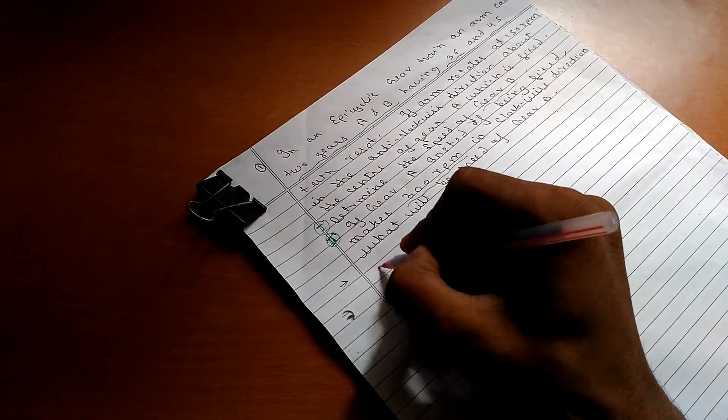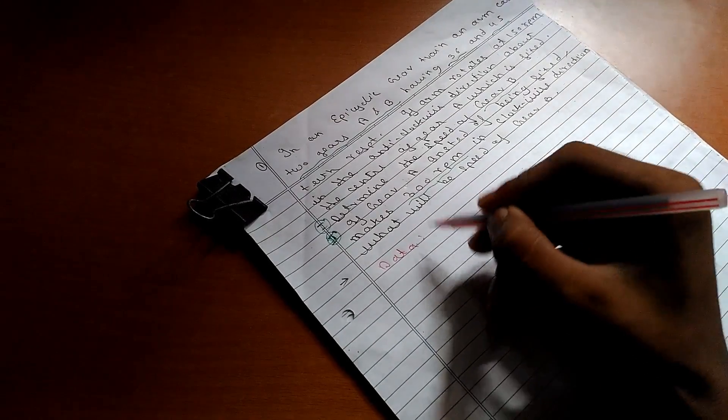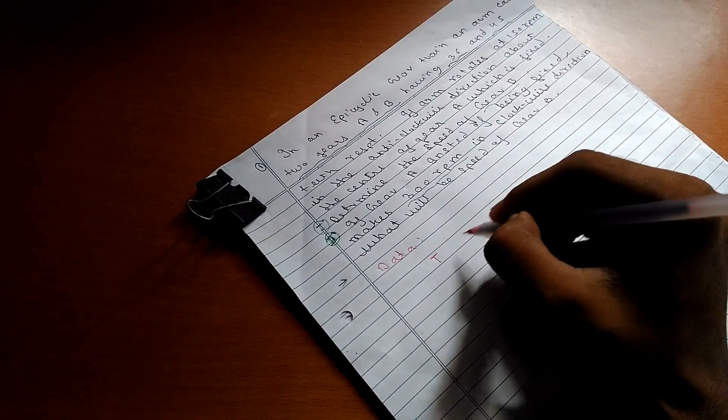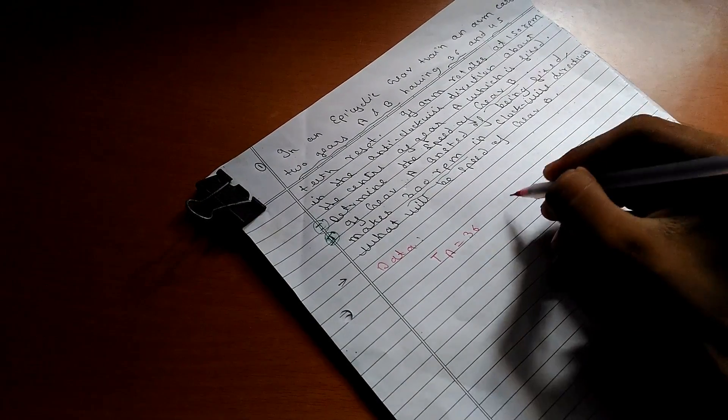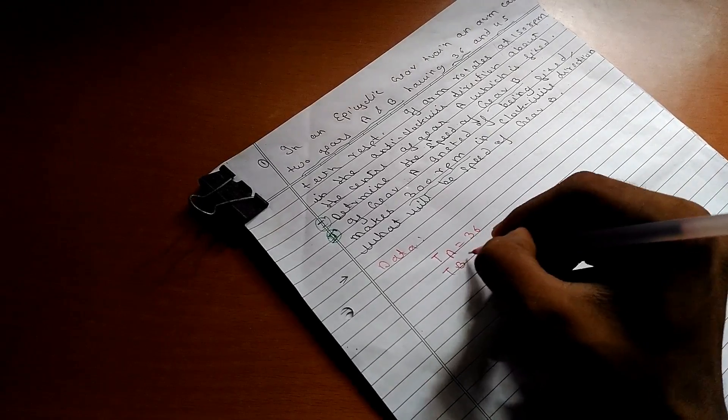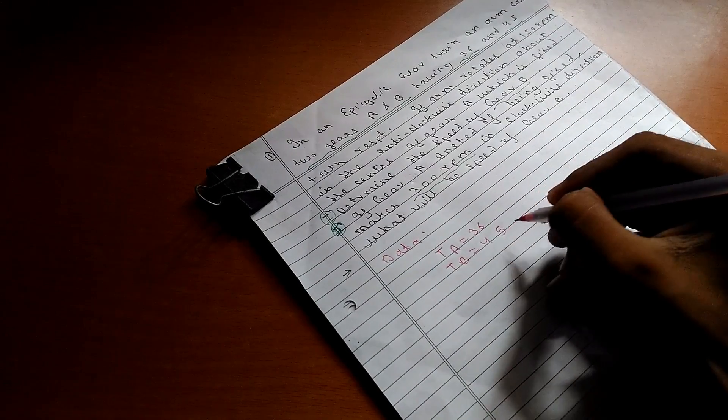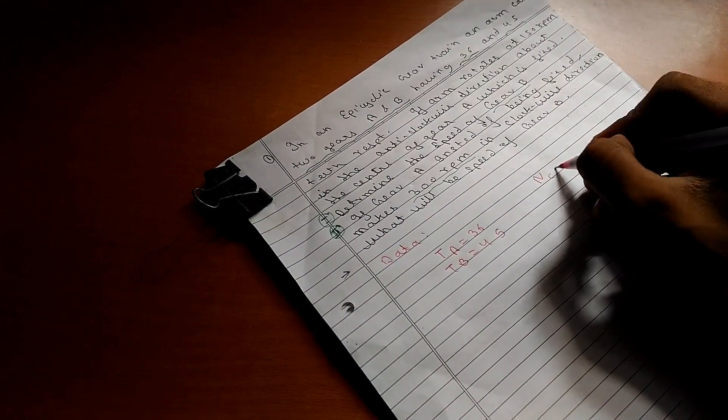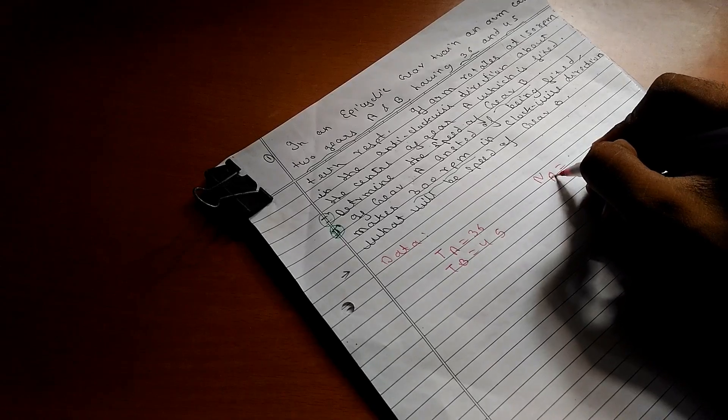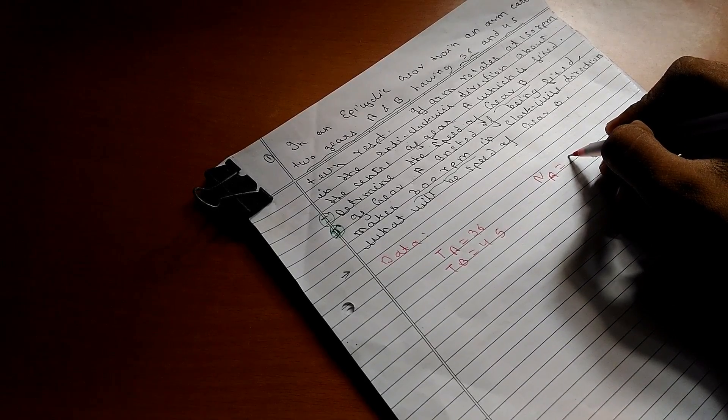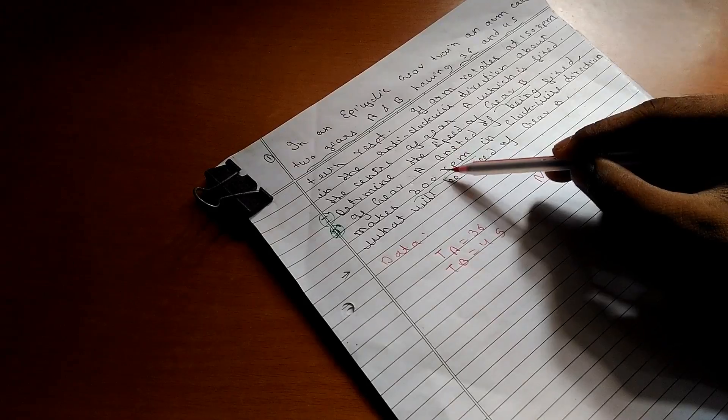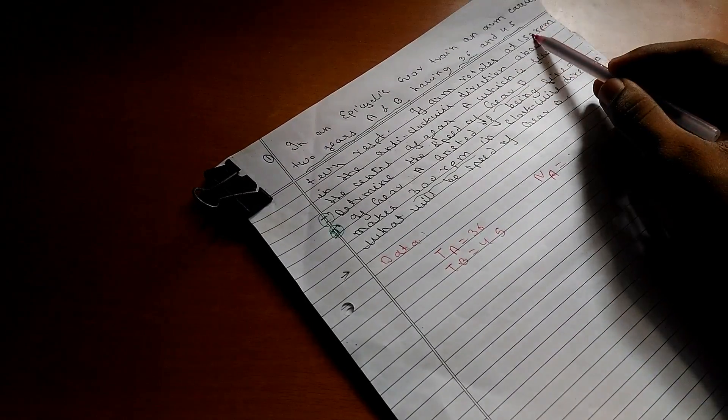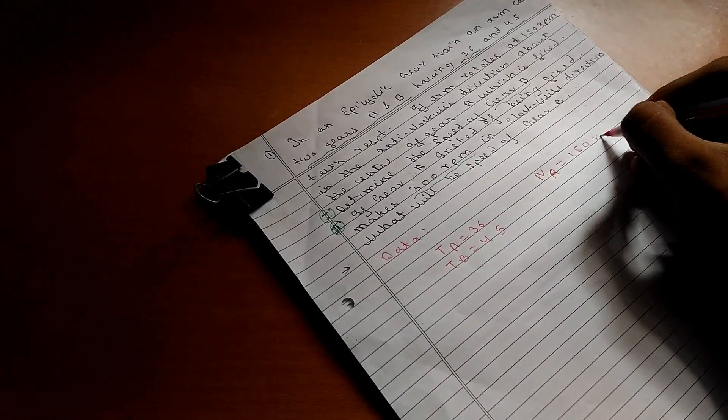With the first step of writing data which is given. We have basically been provided with two data: Teeth of A is 36, Teeth of B is 45, and the speed of this arm C is 150 RPM.